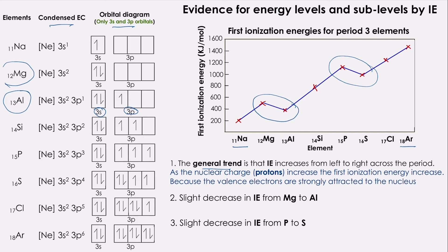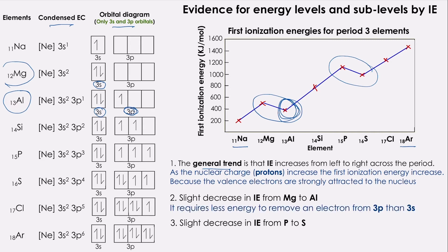It is much easier to remove an electron from 3P than from 3S, as in the case of Mg. This is the reason behind the slight decrease in the ionization energy for Al compared to Mg. It requires less energy to remove an electron from 3P, which is further away from the nucleus, than from 3S.